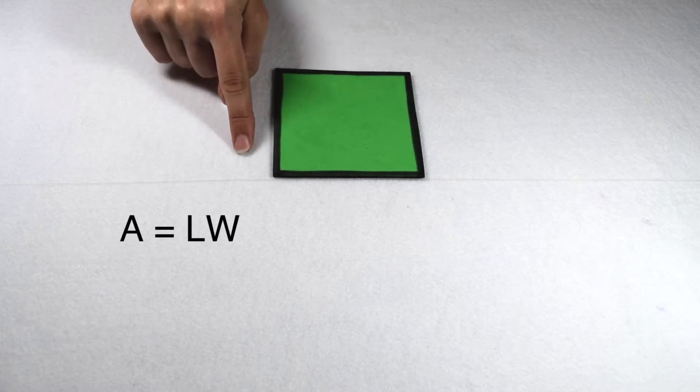When we're looking for the area of a square, we're looking to see how much space is inside the figure. Since a square is a special type of rectangle, we could do this by multiplying length times width.